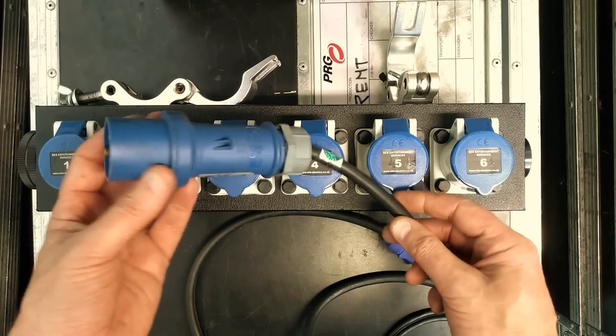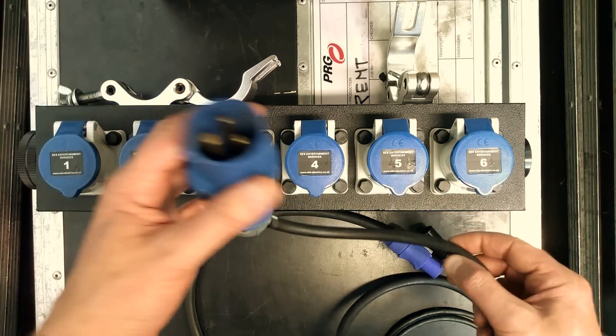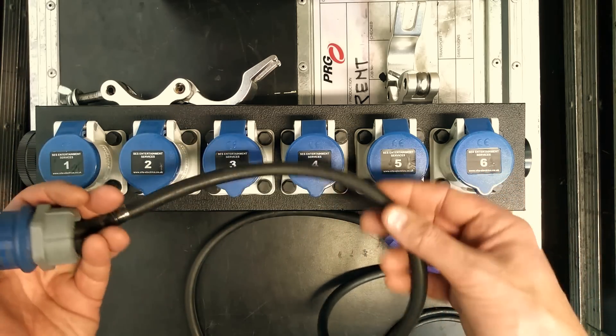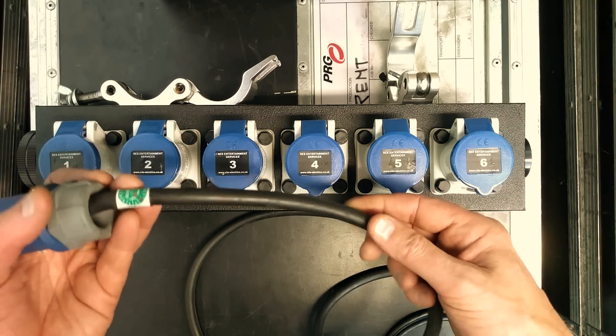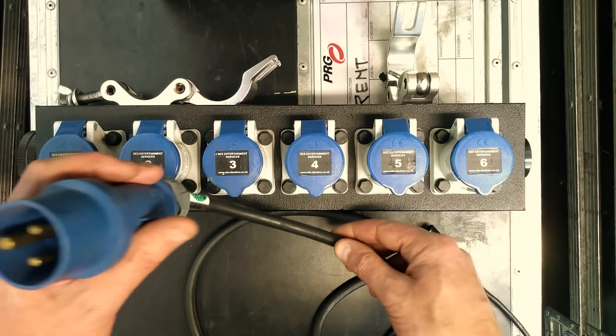So one of the most common connectors in the industry for power distribution is C-form using TRS, Tough Rubber Sheath cable. In this instance, the cable is cross-sectionally 2.5mm on the conductors.